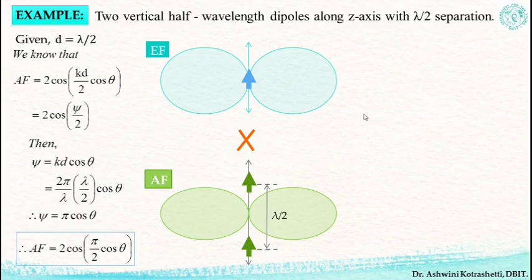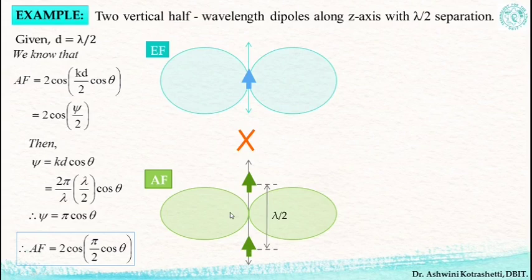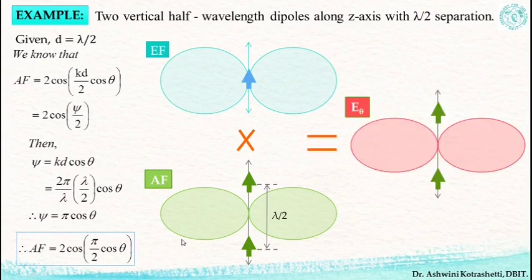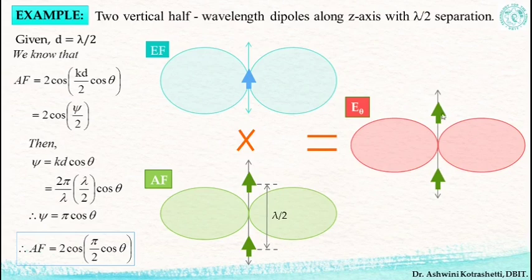The pattern multiplication is the product of these two — the element factor and the array factor. If you note it logically, a product of both results in a shape of pattern similar to a figure-of-8, but the values will be EF times AF. So E theta is the radiation pattern of the array configuration at a distant point P for two Hertzian dipoles placed along the z-axis with a separation of lambda by 2.